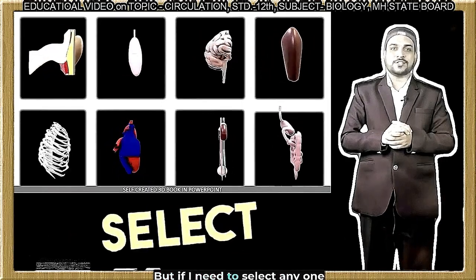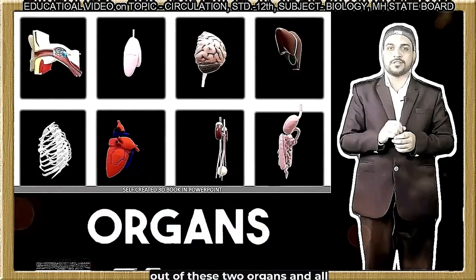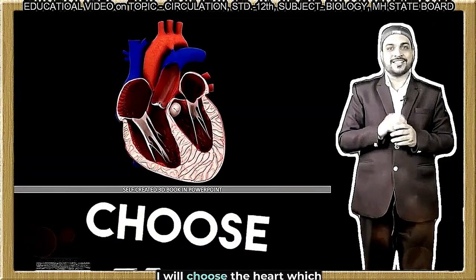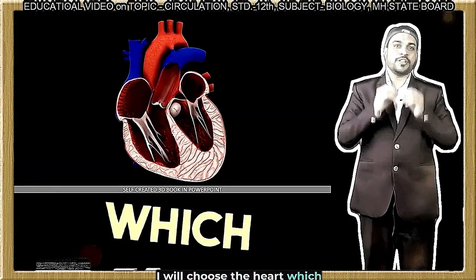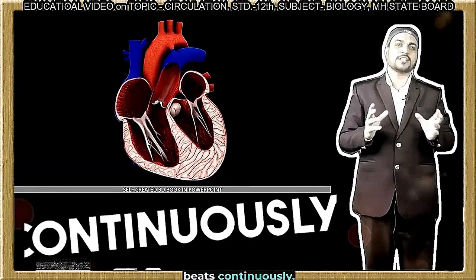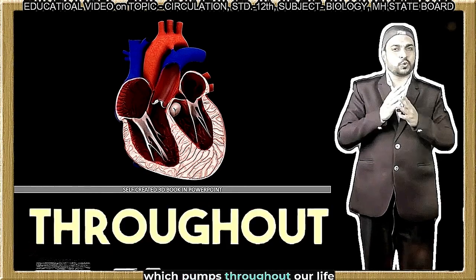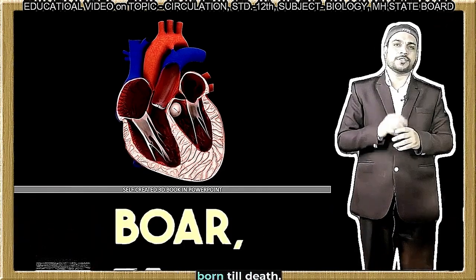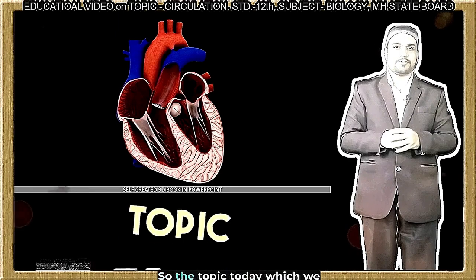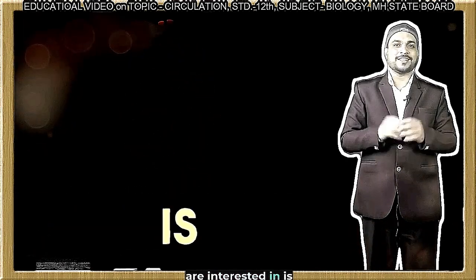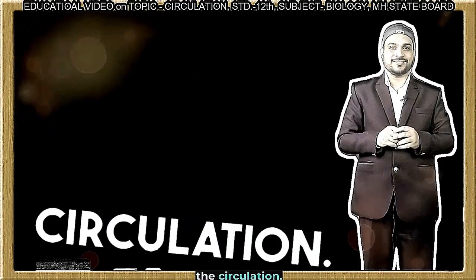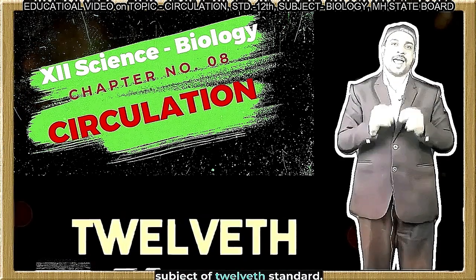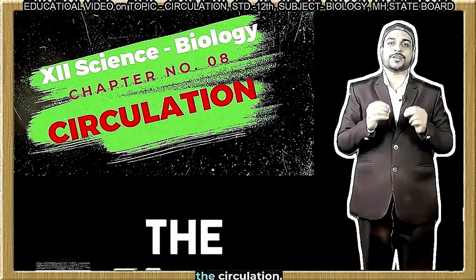But if I need to select any one out of these two organs and all the systems in our body, I will choose the heart, which beats continuously, which pumps throughout our life — right from even before birth till death. So the topic today which we are interested in is circulation, the 8th chapter of biology of 12th standard — circulation.